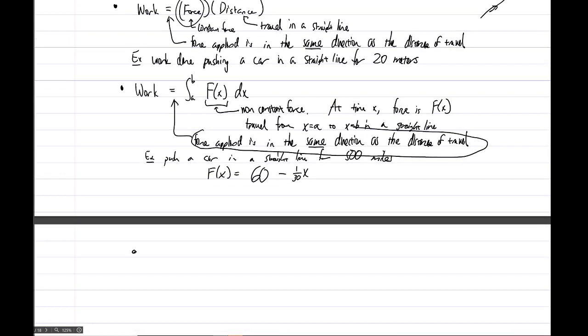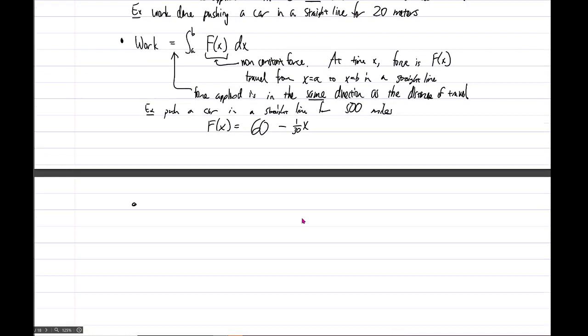Now we want to undo this assumption. We'd like to now be in the setting where what if you don't want to talk about a situation when force applied is in the same direction as distance of travel? Because that's an assumption. So now you can say work is equal to line integral over C, vector field dot dr.